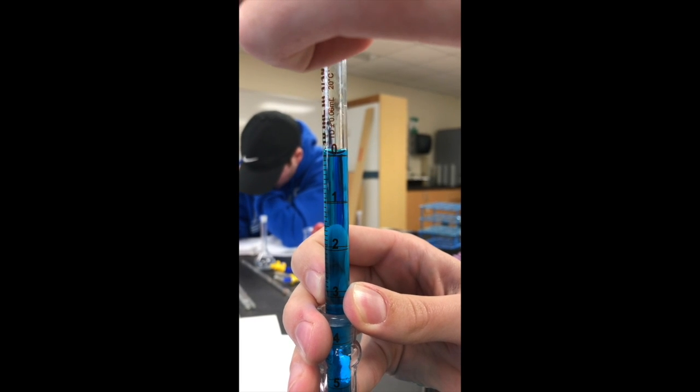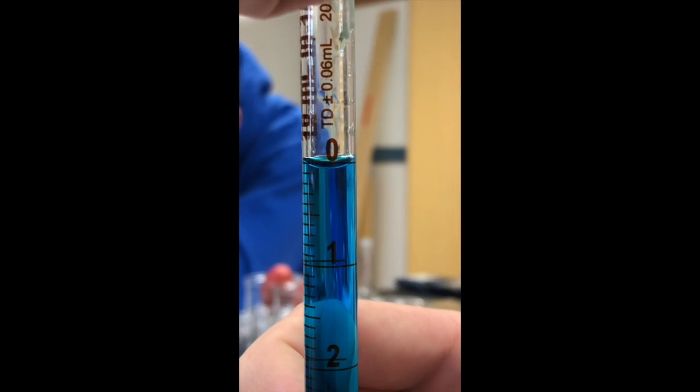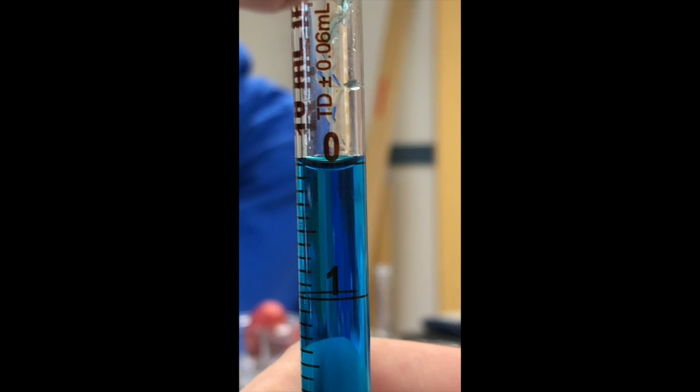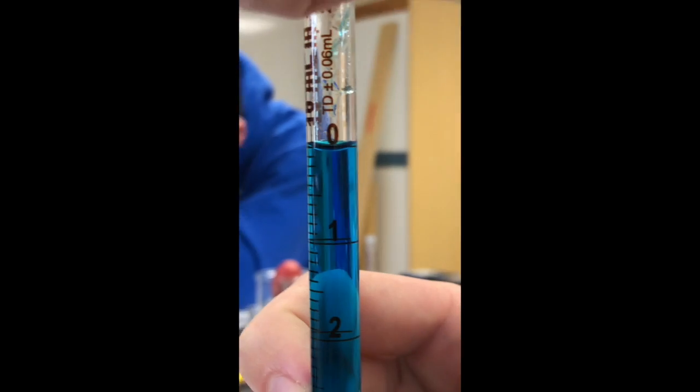As you can see on this close zoom up, the meniscus is right at zero, meaning that the pipette is ready to be used to help measure.